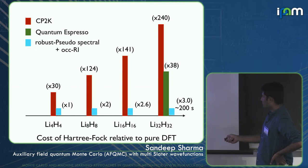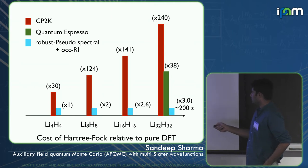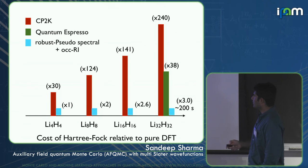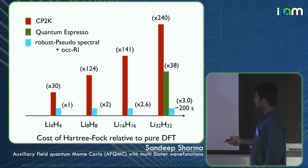With these improvements, the pre-factors going from pure DFT to hybrid DFT are much reduced. For something like Li₃₂H₂, on a simple laptop it takes about 200 seconds to complete the entire Hartree-Fock calculation.